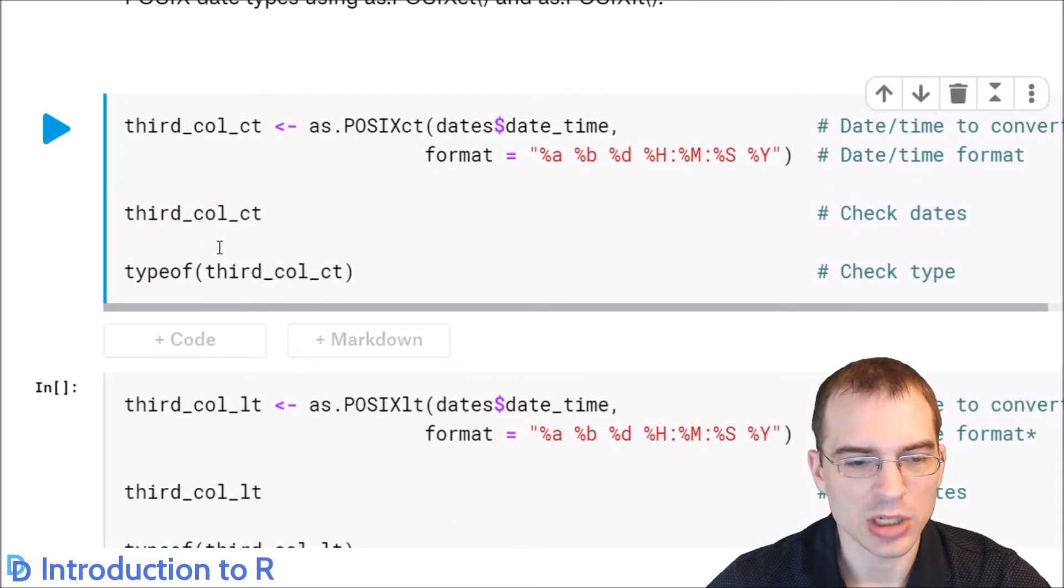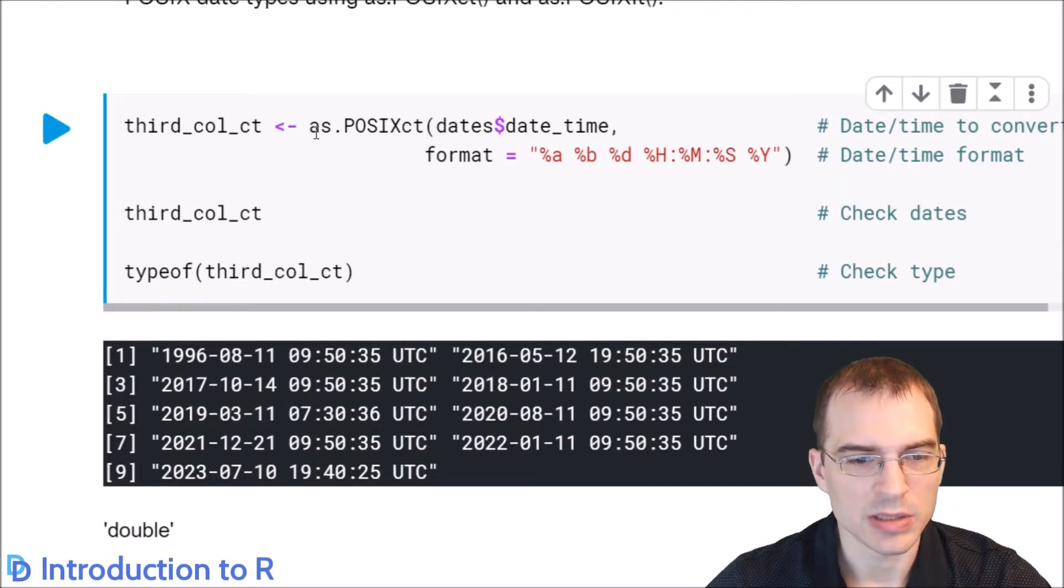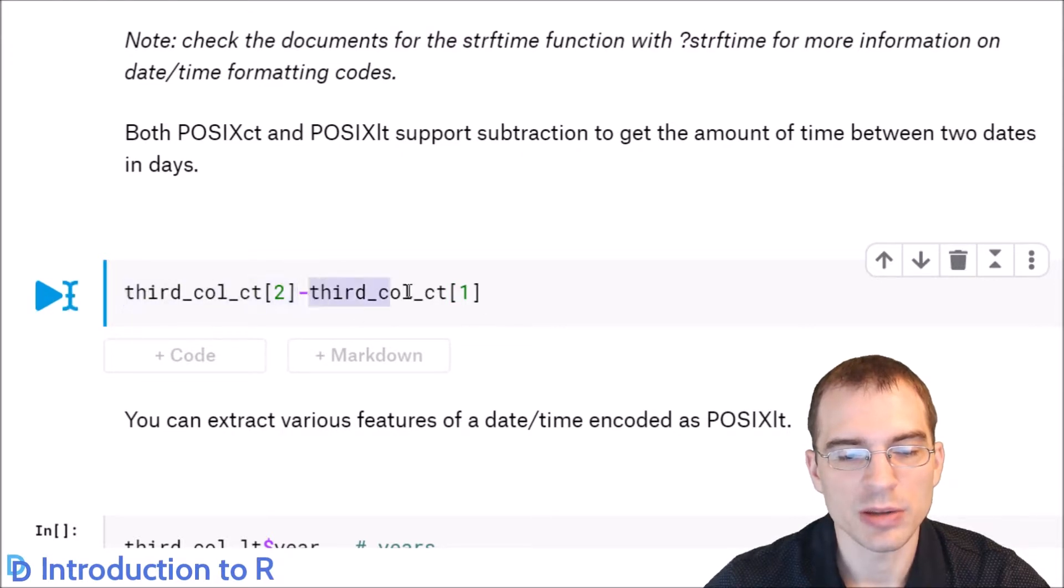When we run this and check the type, we see that it's now stored as a double in terms of number of seconds. When we print them out, they're formatted as a full date, even with a time zone. Both of these POSIX date-time formats allow for subtraction between two different dates to reveal the amount of time that has transpired between those two days. If we take the second entry and first entry of that column and subtract them, it'll show us how much time has passed.